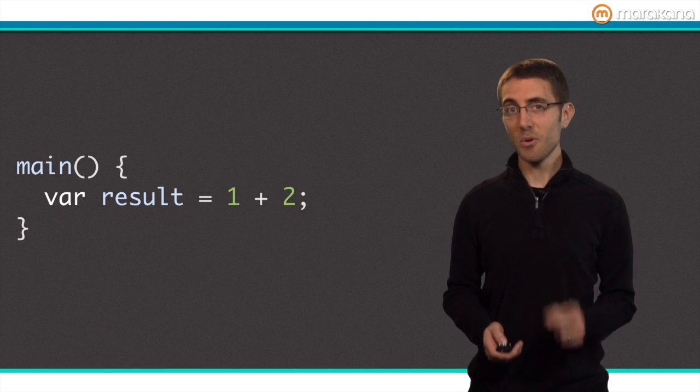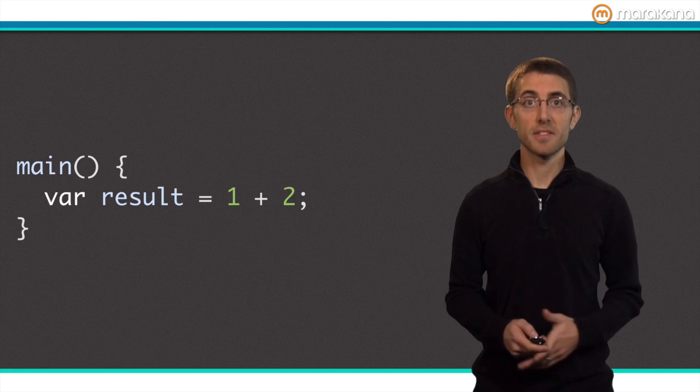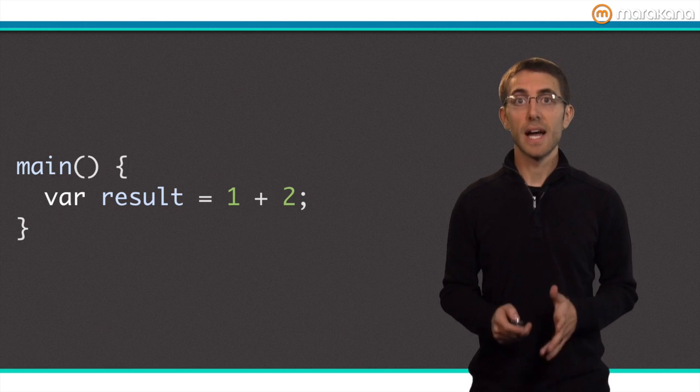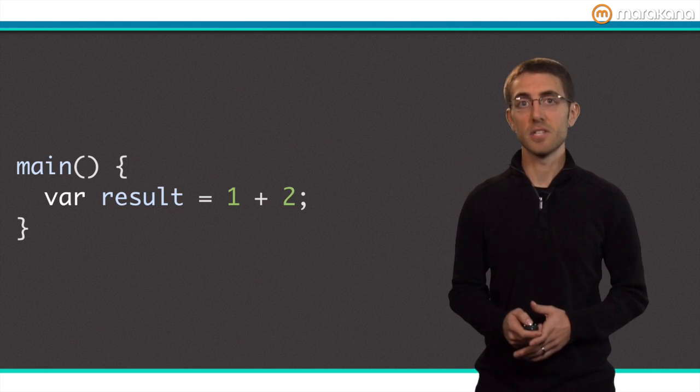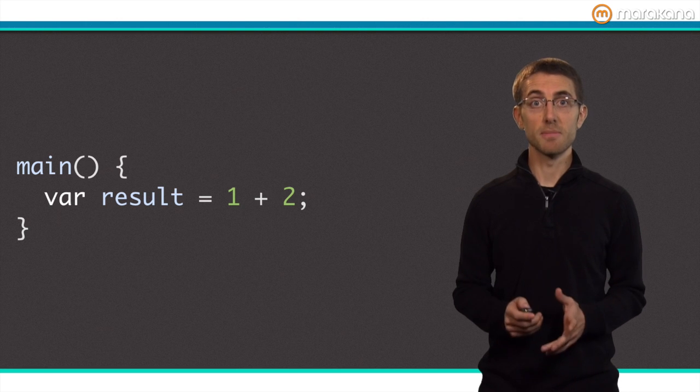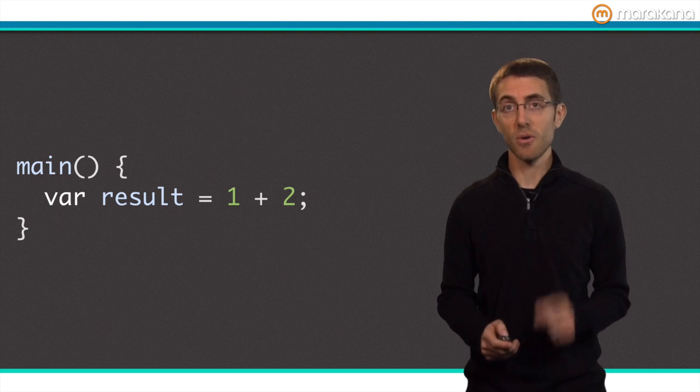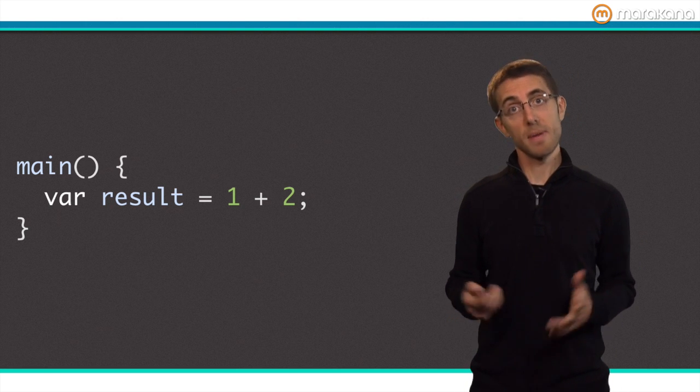Remember, Dart is at its core a dynamic scripting language. Types are optional, and thus the VM must, in production mode, execute the code as if all static type annotations did not exist. Production mode actually gets a speed boost by ignoring static types, because it can avoid many type checks.